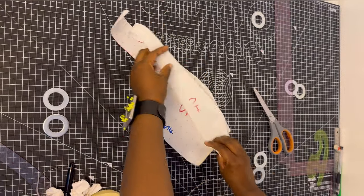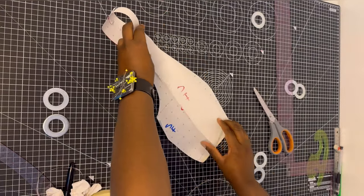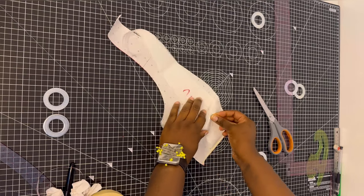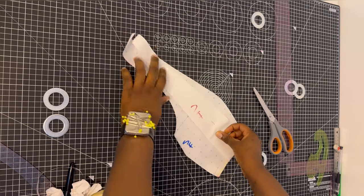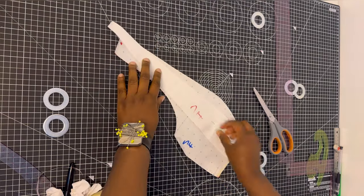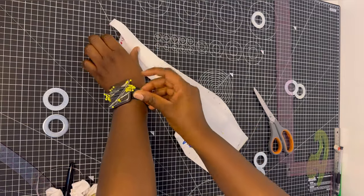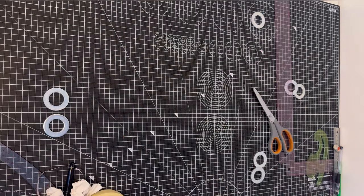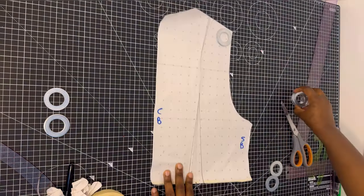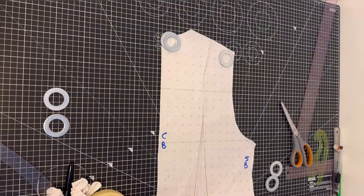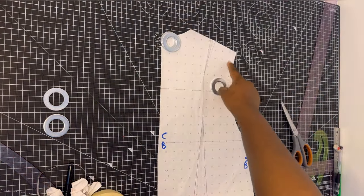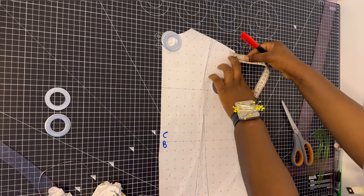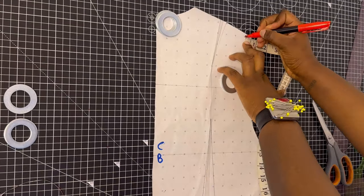Remember to label your pattern: write down the name, allowances, grain line, and mark any notches needed. Pin it in place and set it aside, then grab the back bodice.